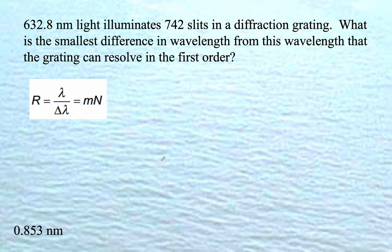All right, 632.8 nanometer light illuminates 742 slits in a diffraction grating. What is the smallest difference in wavelength from this wavelength that the grating can resolve in the first order?